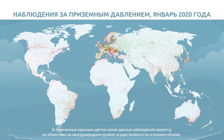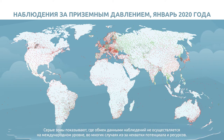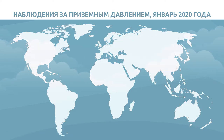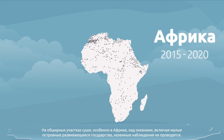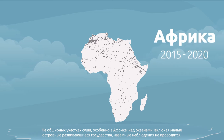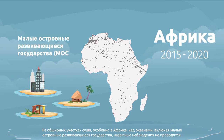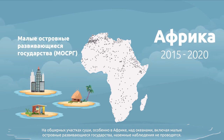In the red areas, the observations exist, but not all are being shared internationally. The grey areas show where observations are not shared internationally, in many cases due to a lack of capacity and resources. Over vast areas of land, particularly in Africa and the oceans, including small island developing states, surface-based observations are missing.